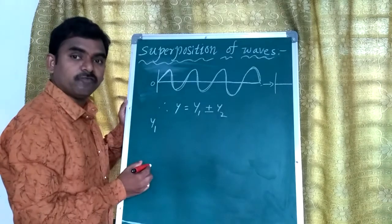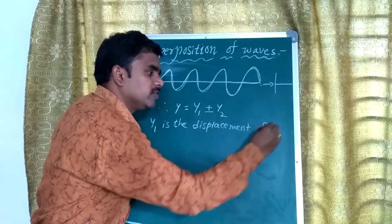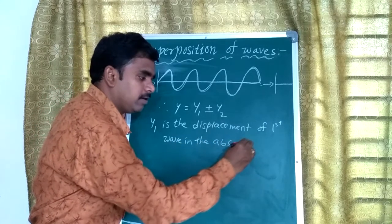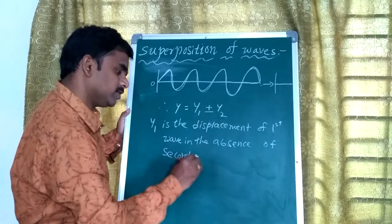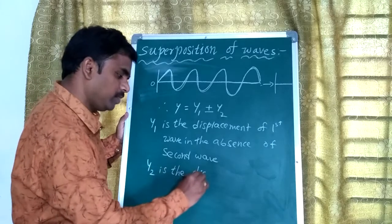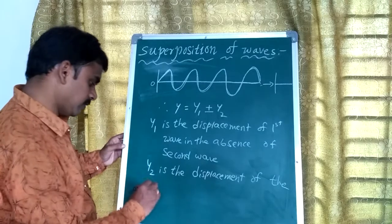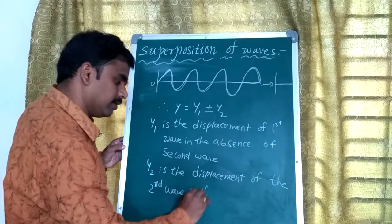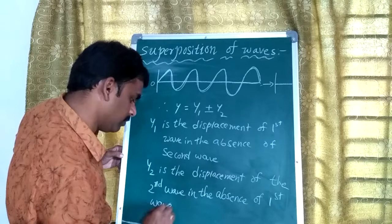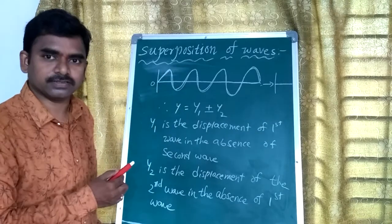Y1 is the displacement of the first wave. Y2 is the displacement of the second wave in the absence of the first wave. Here Y is the resultant displacement — when these two waves are overlapping, what will happen?